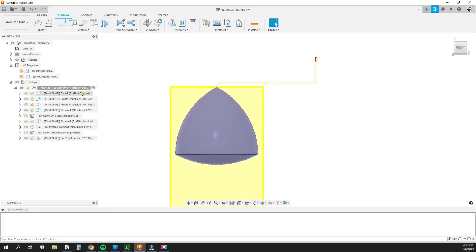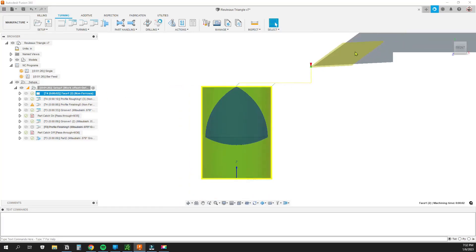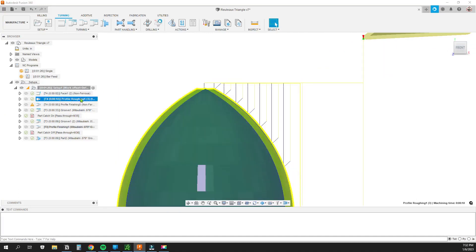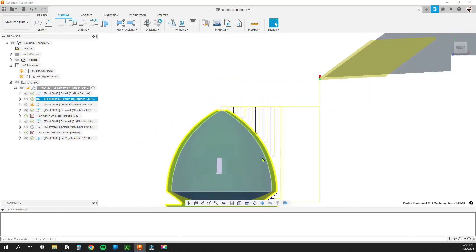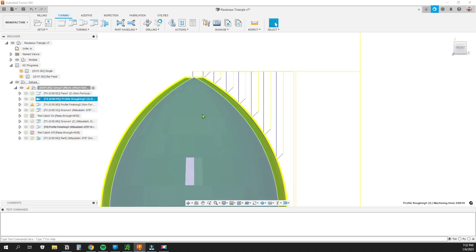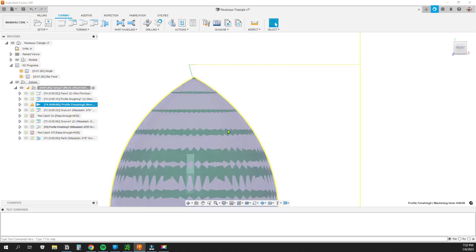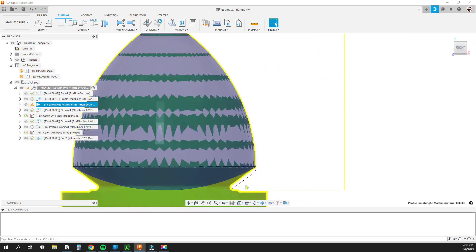So first off I come in here with a VCGT tool and I do the facing pass. Then I rough everything out here. You can see the green is the stock that's left and I bring in a finishing pass and it comes in and it kind of finishes the back side a little bit but not much. The grooving tool will do that.